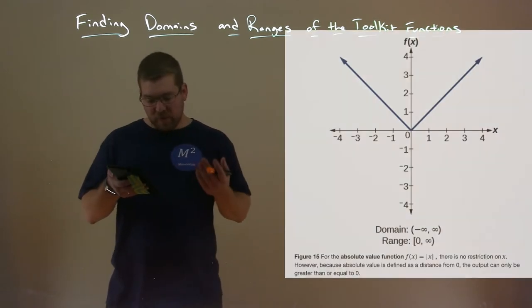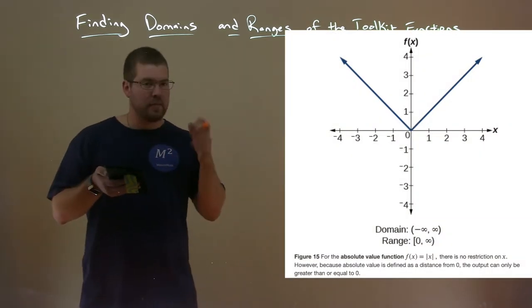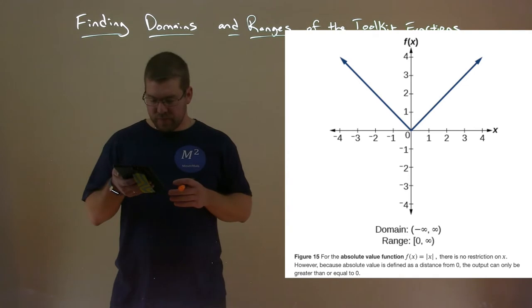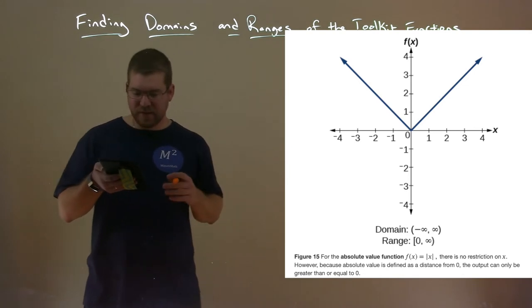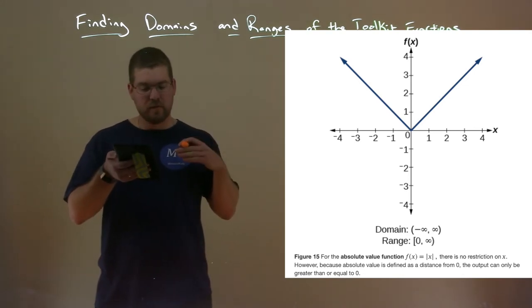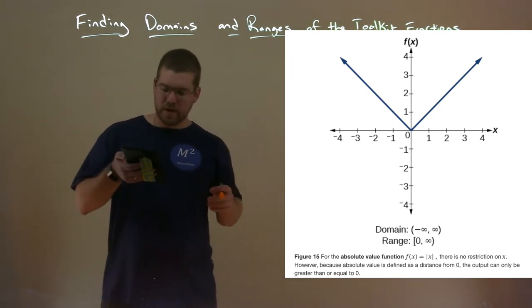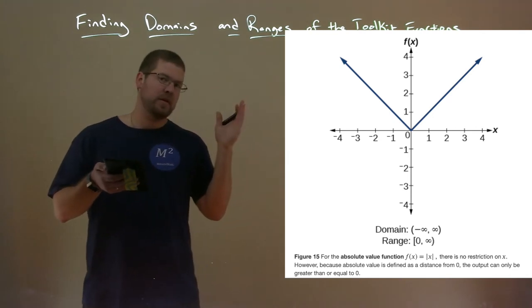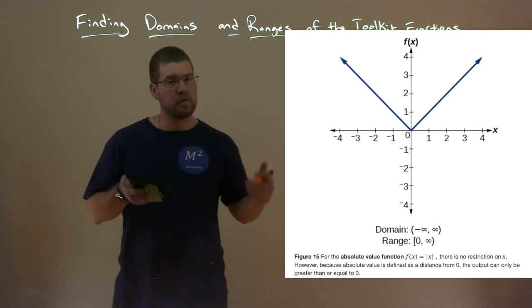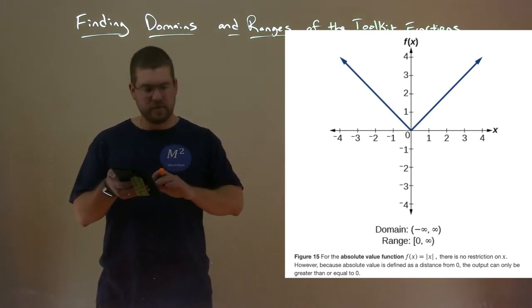We have the absolute value function f of x equals the absolute value of x, and its domain is from negative infinity to positive infinity, but its range starts at zero, including zero, and goes up to positive infinity.